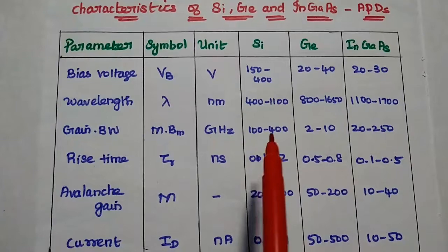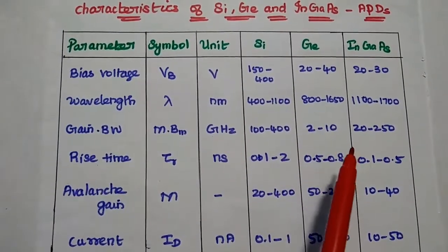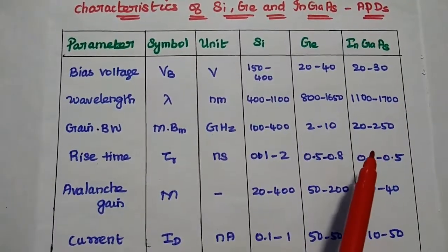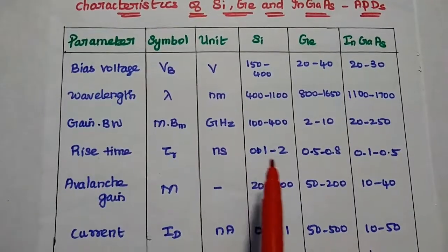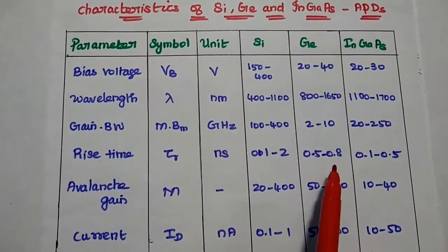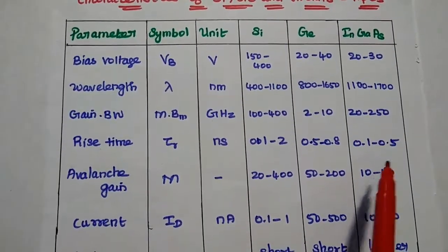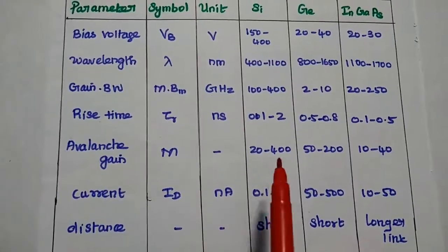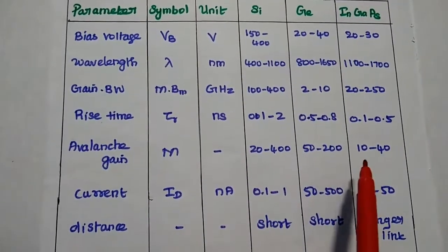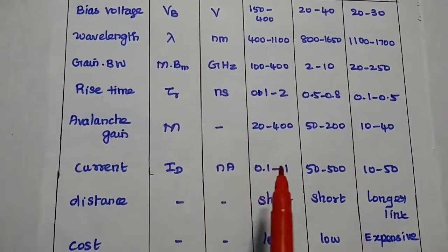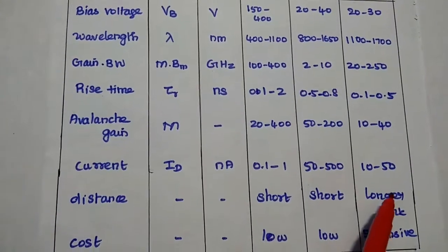The gain-bandwidth product is in terms of gigahertz, its value is 100 to 400, 2 to 10 for germanium, 20 to 250 for indium gallium arsenide. The rise time is in nanoseconds, here 0.1 to 2, here it is 0.5 to 0.8, for indium gallium arsenide 0.1 to 0.5. Then the avalanche gain is 20 to 400, here 50 to 200, 10 to 40. The current range is 0.1 to 1, 50 to 500, 10 to 50.